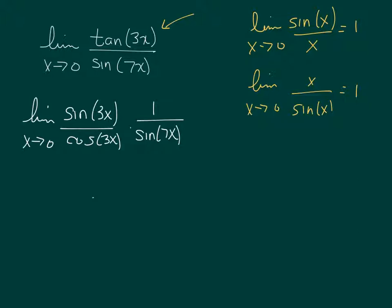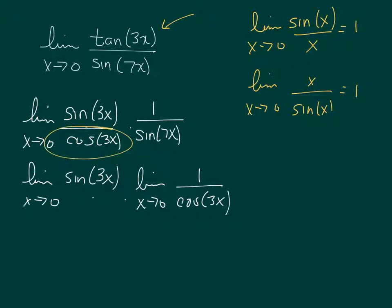So now what I'm going to do is I'm going to split this up into pieces, meaning I'm going to put the sine of 3x times the limit as x approaches 0 of 1 over cosine of 3x. So that's just that piece, I'm just splitting these up into pieces, times the limit as x approaches 0 of 1 over sine of 7x.